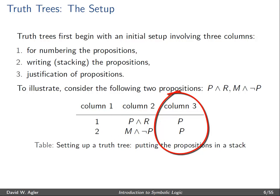The third column is the justification of the formulas. It explains why those formulas are there. And in this case, these are the formulas that we want to analyze, and so we'll simply write P for proposition.